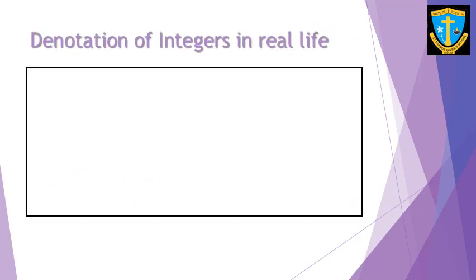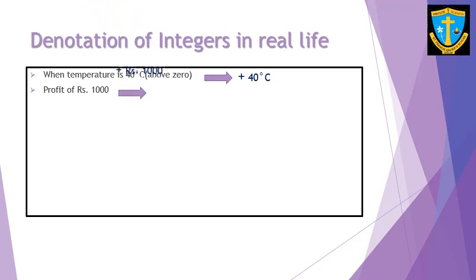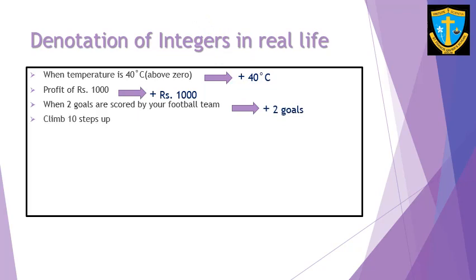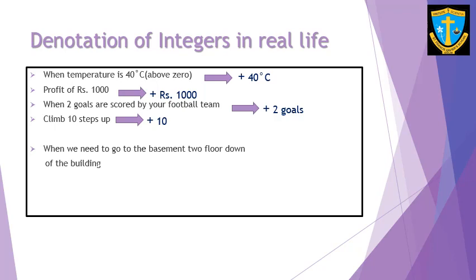Where do we use integers in real life? When the temperature is 40 degrees Celsius — that is above zero — we use a positive sign. A profit of rupees 1000 carries a plus sign. When two goals are scored by your football team it will be plus two goals. When we climb ten steps up it will be plus ten. But going to the basement two floors down from ground level will be negative two, as shown on a lift or elevator.